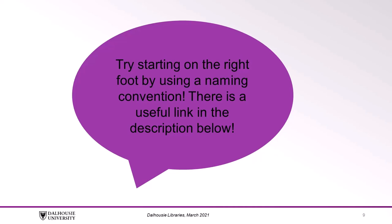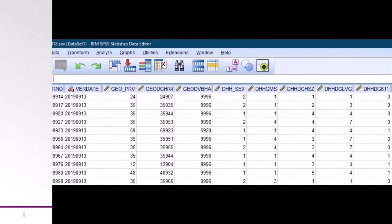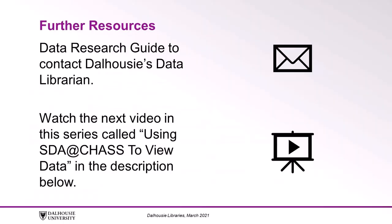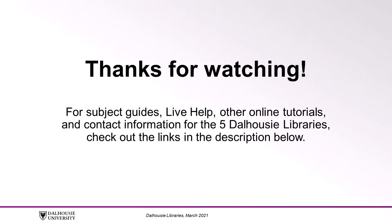You can now begin working with the downloaded files within your statistical software of choice. Please note that because we are working with microdata, there may be hundreds of thousands of lines of data — like in this displayed SPSS file we've already loaded into SPSS Statistics, which has over 100,000 rows of data. Remember to be patient, and if you run into any issues, you can check out the data research guide in the description below for the contact information for Dalhousie's data librarian. Check out our next video in this series, 'Using SDA at CHAS to View Data,' in the video description below, where you can learn how to use the SDA at CHAS interface to do some simple analysis online. Thanks for watching. For subject guides, live help, other online tutorials, and contact information for the five Dalhousie libraries, check out the links in the description below.